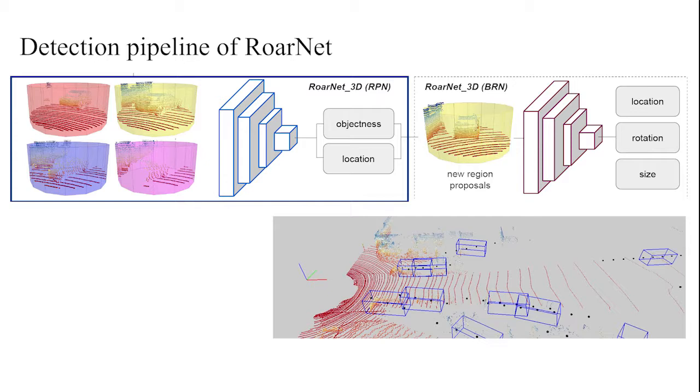Taking the point cloud sampled from each region proposal as input, RPN predicts the location of object relative to the center of region proposals. It also predicts an objectness score, which reflects the probability of an object being inside a region proposal.